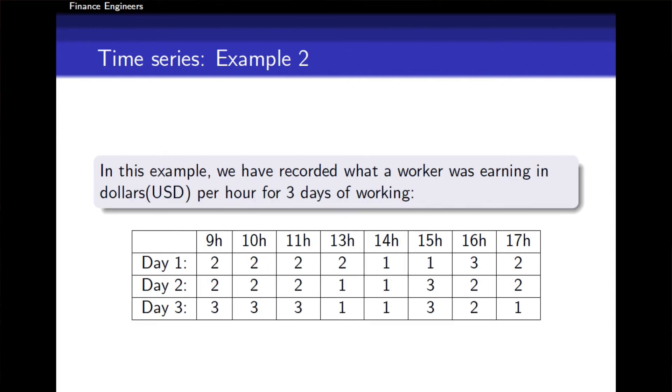In the second example, we have recorded what a worker was earning in dollars per hour during three days of working. He was working from eight in the morning, and from eight until nine he earned two dollars, and so on, until day three at 5 PM where he earned only one dollar.